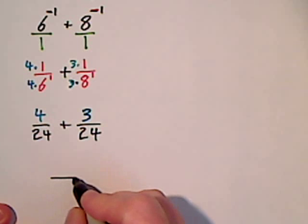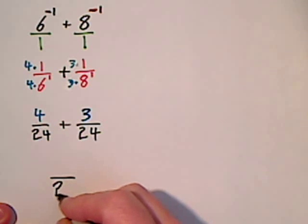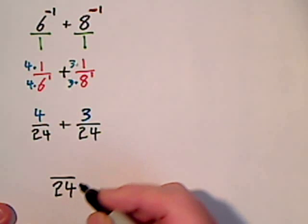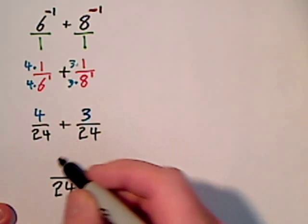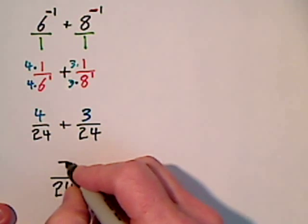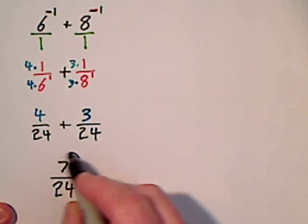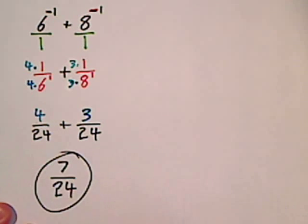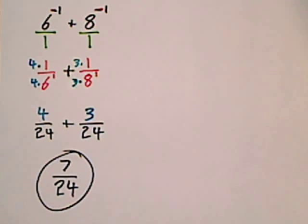The whole reason you had to get common denominators is because you keep them. Then 4 and 3 is 7, so the answer is 7 over 24.